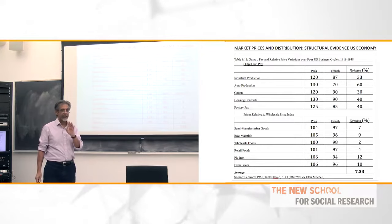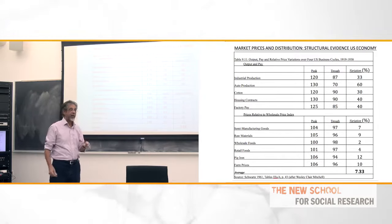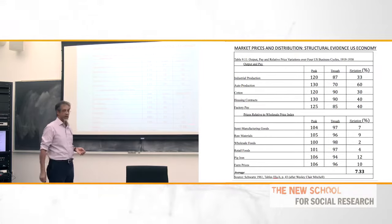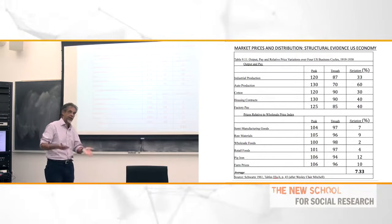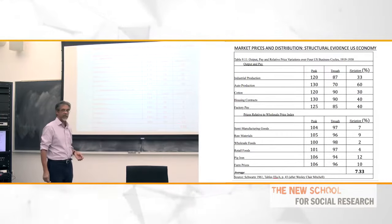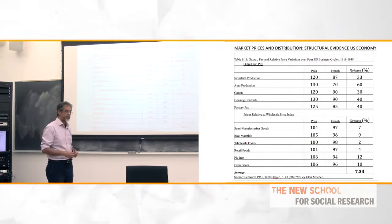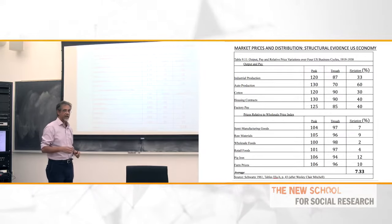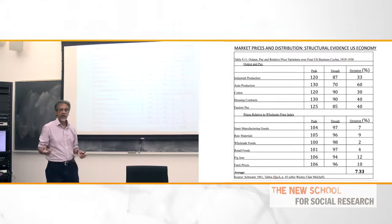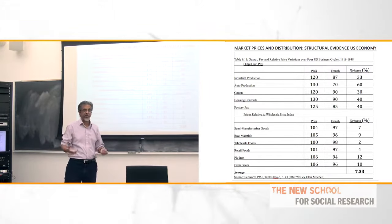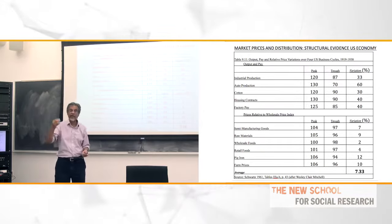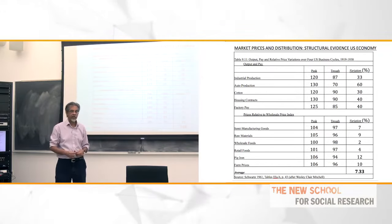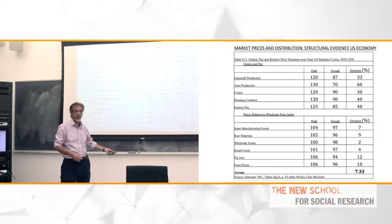However, when you look at relative prices, you find for semi-manufacturing goods 7%, raw materials 9%, wholesale foods 2%, retail foods 4%, pig iron 12%, farm prices 10% — an average variation of 7%, which is Ricardo's exact number. Ricardo was not a psychic. He came to this number from observation. Schwartz, as a mathematician, sets up an experiment where he can see the two components — holding one constant, varying the other — and gets a variation of 7%. This is such a simple, clear, brilliant thing, and nobody thought of it before Schwartz. You can see why Ricardo could have observed this: he could have observed prices changing over cycles, seen that they don't change very much, and constructed this numerical example to illustrate the scientific result.